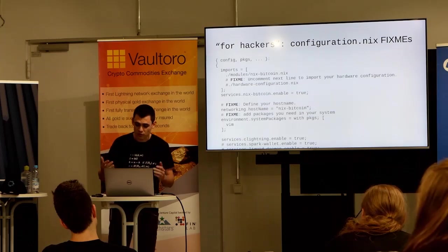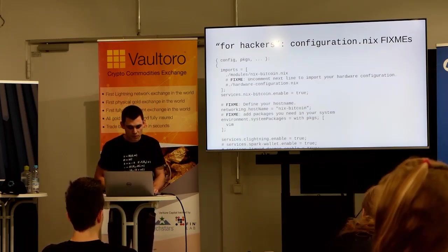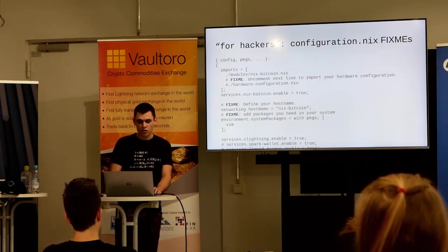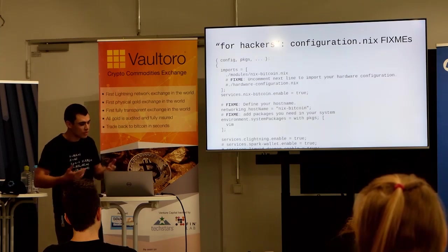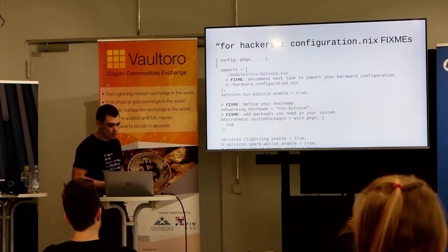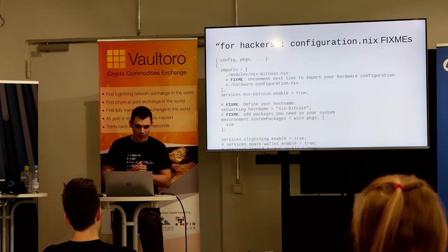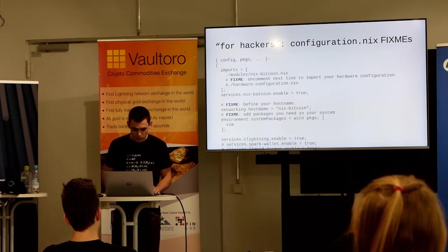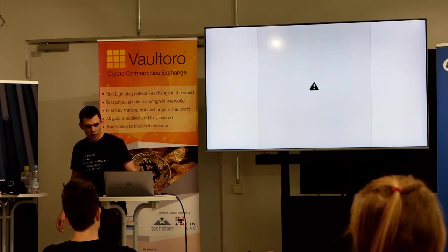For example, if you install it on a NixOS machine, you need to import a hardware configuration — but this is all explained once you install NixOS. Then you enable the NixBitcoin service. You probably also want to change your hostname, add some additional packages that you need like htop or tmux, and then you say: I want to enable the CLightning service, I want to enable the Spark Wallet service, and so on.